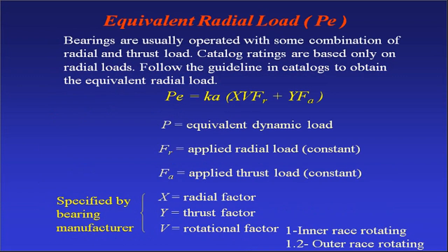Now we will talk about the equivalent radial load. This is the total radial load acting over the bearing. A bearing carries load in terms of both radial load and axial load. This total axial and radial load is converted into a single equivalent radial load. Bearings are usually operated with some combination of radial and thrust load — both loads are present.